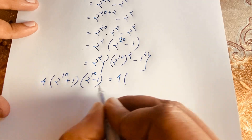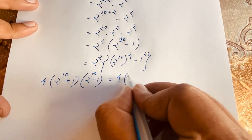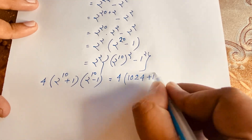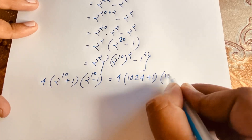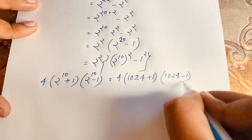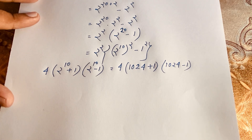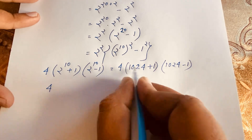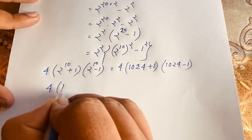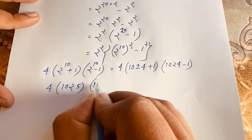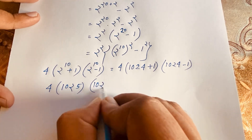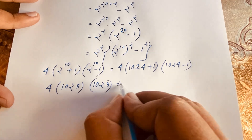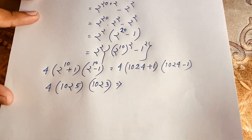Now, 2 to the power 10 equals 1024, so we get 4 times 1024 plus 1 times 1024 minus 1, which is 4 times 1025 times 1023.